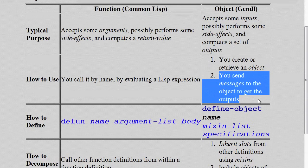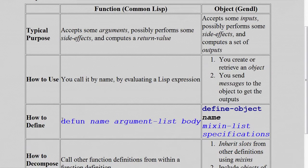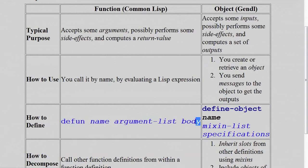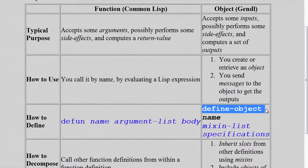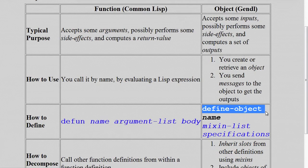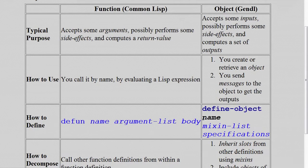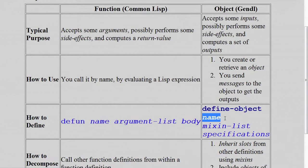Now, how do you define a function? You say defun, and then the name, and then argument list, and then body, just like we've seen in the example. For an object, you define it similarly. You use define-object as the operator instead of defun. You still give a name. This will be the name of the object rather than of a function.